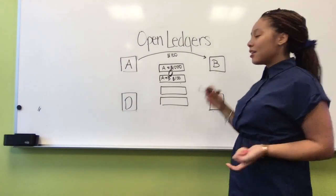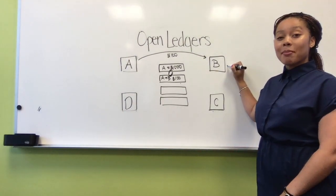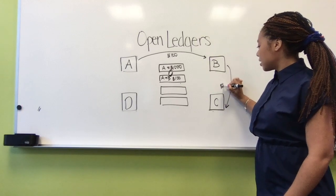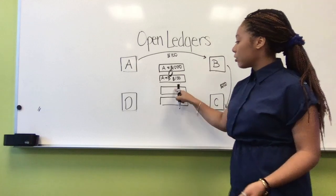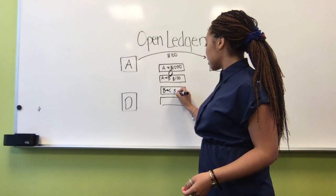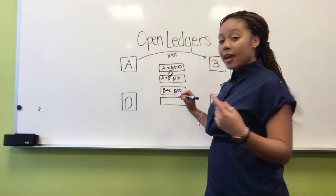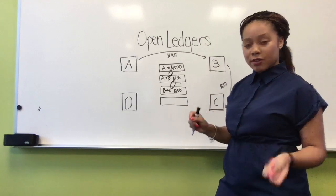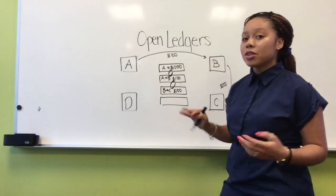Now A creates a transaction to send B that hundred dollars that you owe them. So a transaction is added into the ledger showing A moving to B a hundred dollars. And in the open ledger, these transactions are linked.